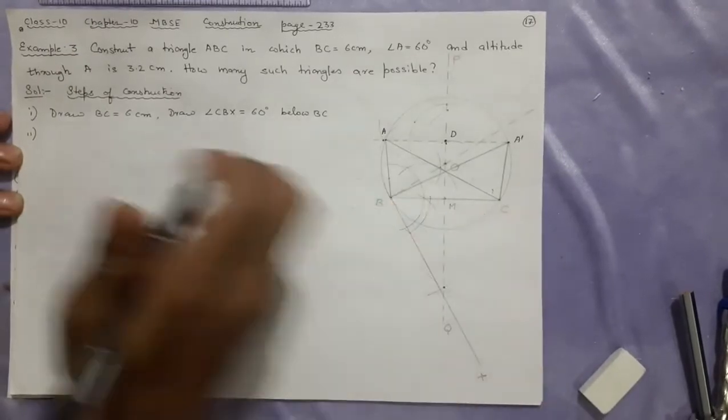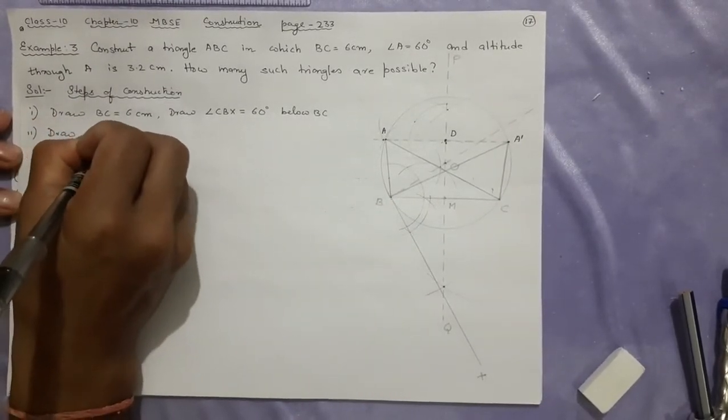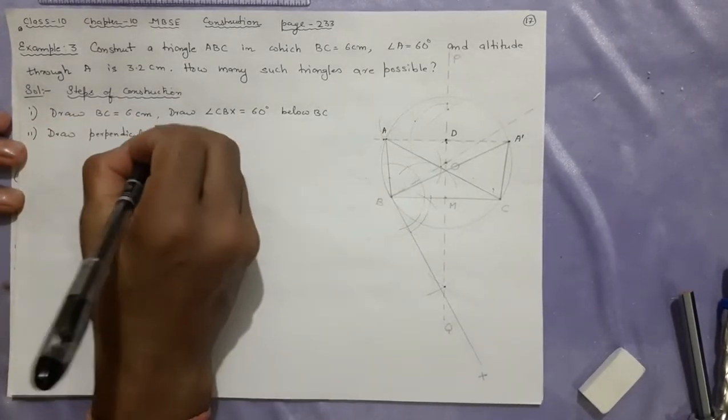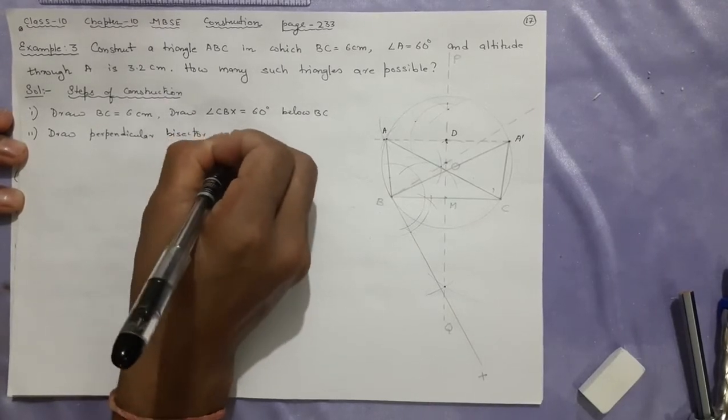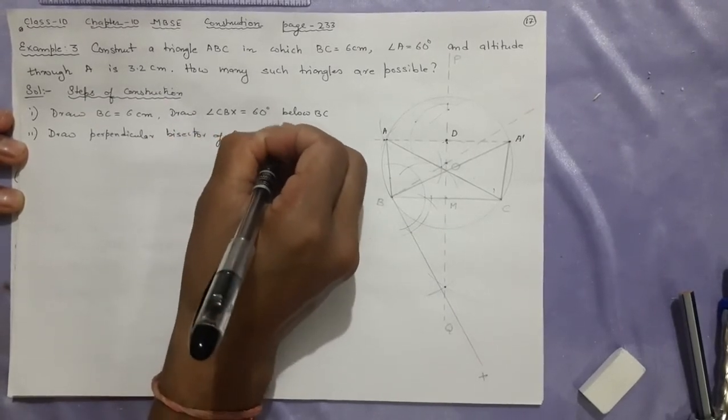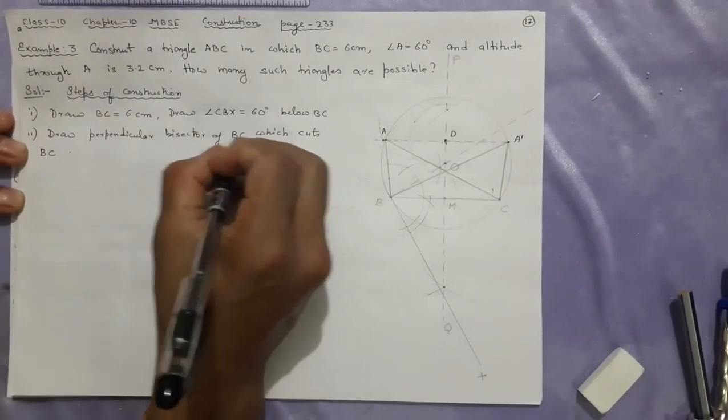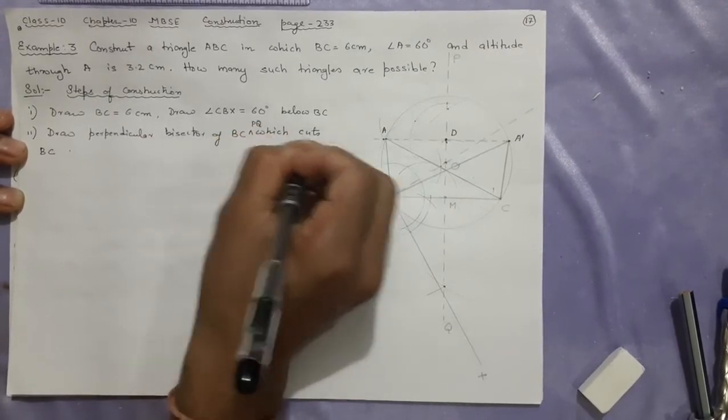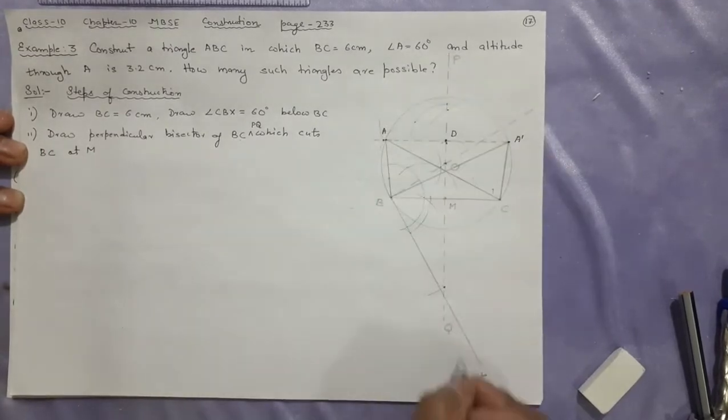Next, what we did? Draw perpendicular bisector. If you write like this, you will remember the process also. Perpendicular bisector of BC, which cuts or intersects BC. Bisector of BC, its name will be PQ, which cuts BC at M. Its name is PQ that cuts the BC at M.